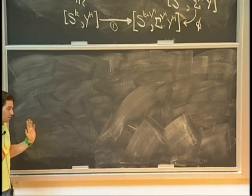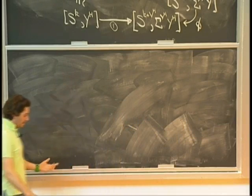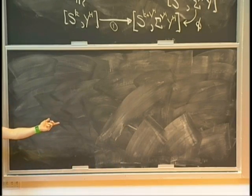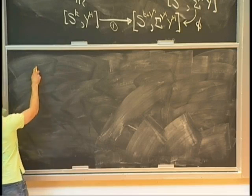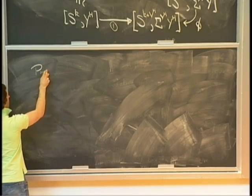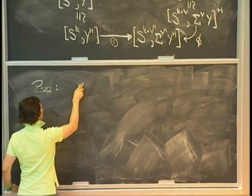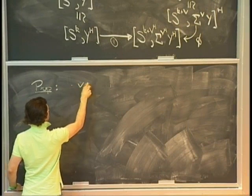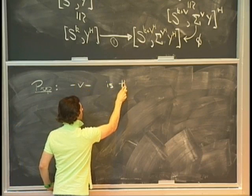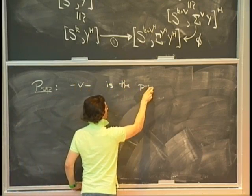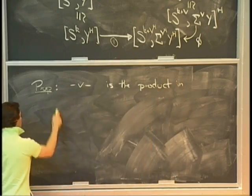So as I take suspensions of the Cartesian product, I'm going to see that extra smash factor always — it's not going to go away. The better, honest statement — the one I proved yesterday — is that the coproduct, the wedge, is the product in the Spanier-Whitehead category.